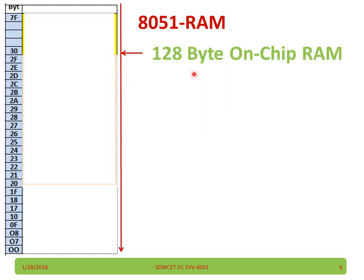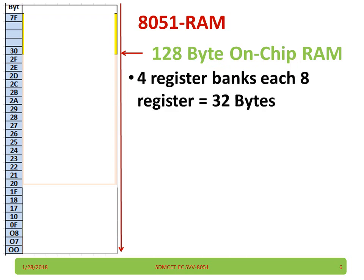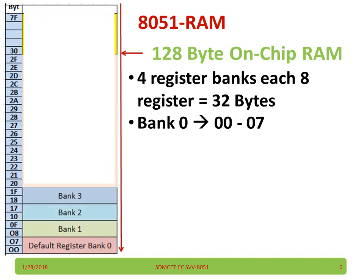The total 128-byte on-chip RAM contains 4 register banks, each with 8 registers, giving us 32 bytes across 4 banks. We start from bank 0, whose address is 00H–07H, and bank 1, bank 2, followed by bank 3.